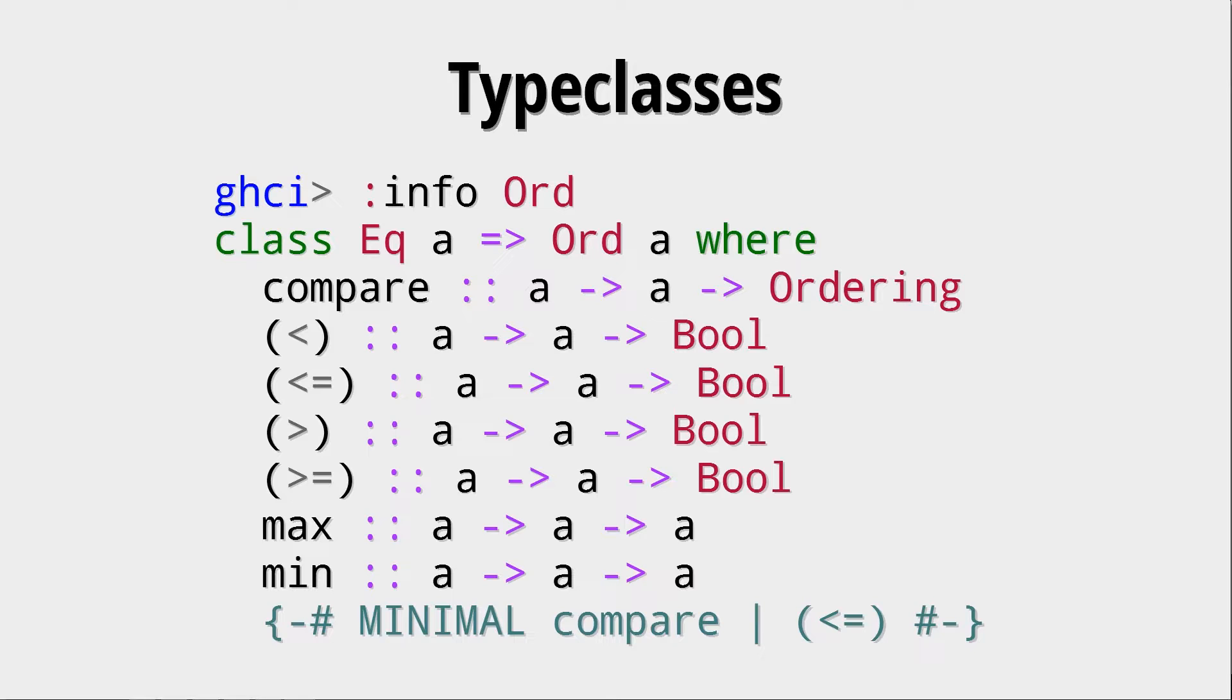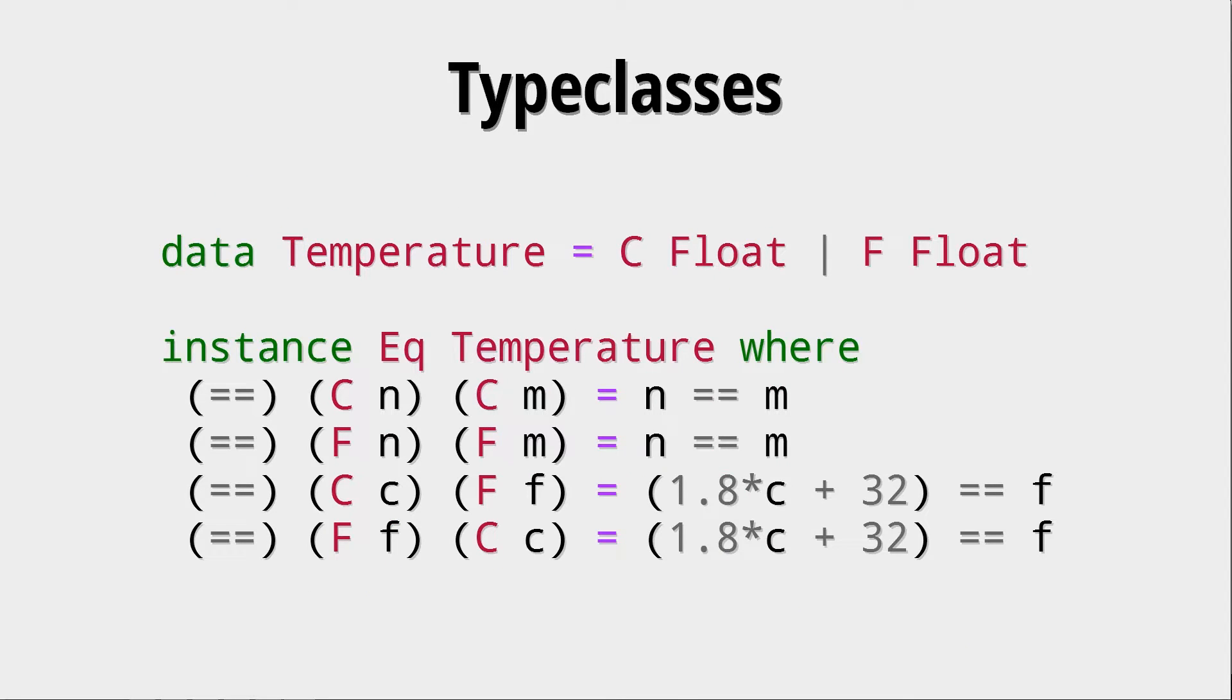So let's look at an example of how to do such an instance of a type class. Here we have a data type temperature, which stores temperature either in Celsius or Fahrenheit. So, that's a bit of a problem, because how do we compare that? Well, we create an instance of the Eq type class for this temperature, and here we see that the not equals is not defined, it's derived implicitly, we only define the equals.